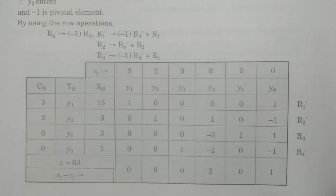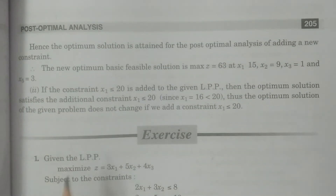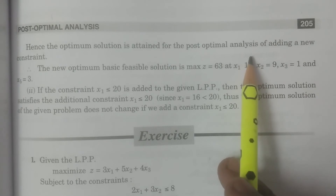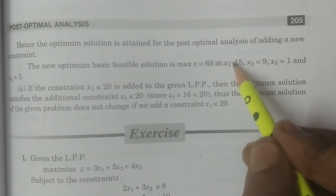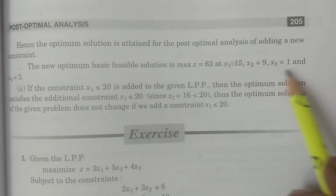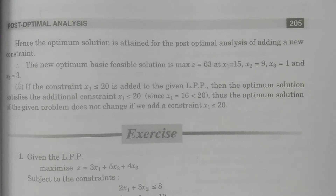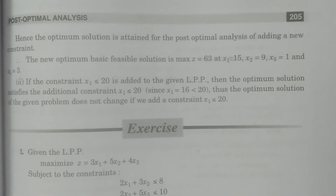Therefore this is the end of the solution. The optimum value is maximum z = 63, and x1 = 15, x2 = 9, x3 = 1. These are the final values. The optimum solution is obtained for the post-optimal analysis, which means after introducing the new constraint, this is the new optimum solution: maximize z = 63, x1 = 15, x2 = 9.